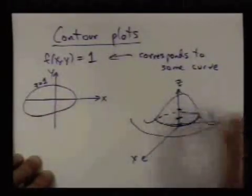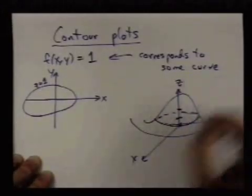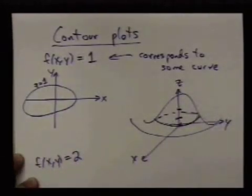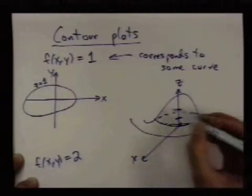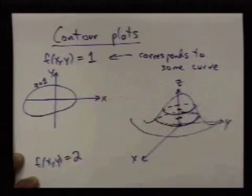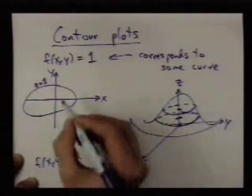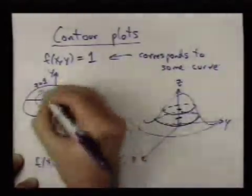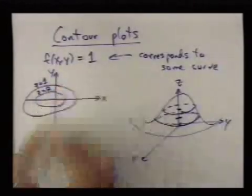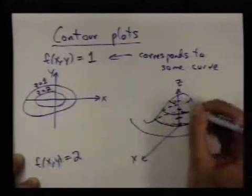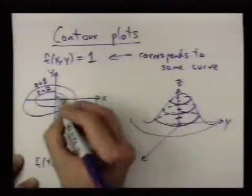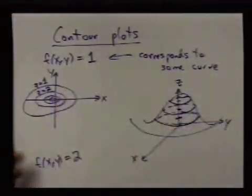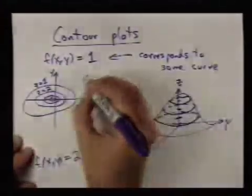I could look at the curve you get by seeing all points in the x, y plane where the function is equal to 2. That corresponds to that curve there. So if I draw that here, it's a little inside this one. And you can continue to do this for successive values of z. And you get what's called a contour plot.